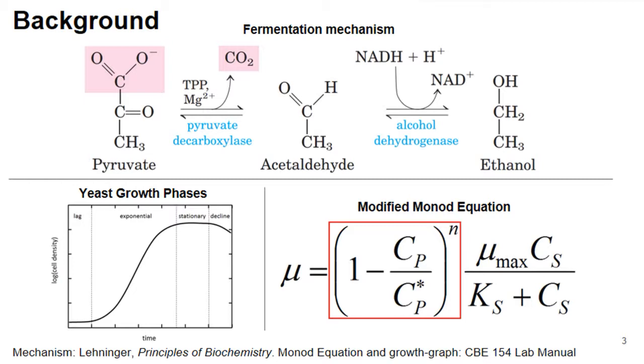the yeast are able to generate small quantities of ATP and continue to survive. The byproduct of this is ethanol, and ethanol in high enough levels is toxic to yeast cells.